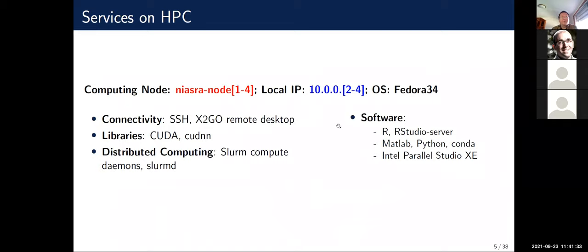Now let's look at the compute nodes. The compute nodes are mainly responsible for computing jobs. SSH is running on them for interactive login, and X2Go is available for remote XFCE desktop connection. CUDA and CUDA libraries are provided for GPU work on nodes 3 and 4. The SLURM computing daemon on compute nodes will accept job schedules from the head node to allocate computing resources for SLURM jobs. Because most of our users are R users we don't have a huge variety of software installed — here is a list of software available on the compute nodes. If you want to use the MKL library you can find it in Intel Studio XE.